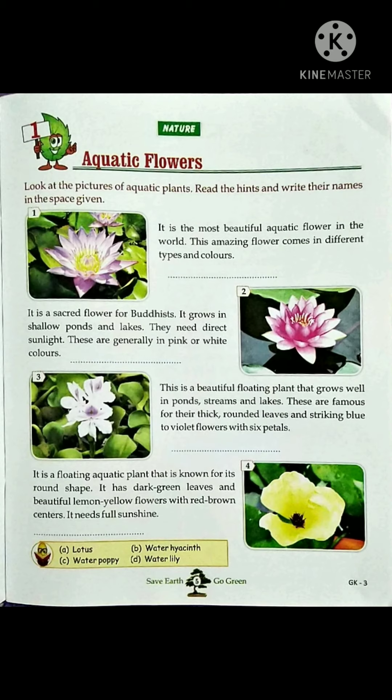This beautiful flower is water hyacinth, which in Hindi is also called 'jal kumbi.' It is a very beautiful flower, but it has a side effect: in the ponds where it grows, it can completely block the pond, so other aquatic animals cannot grow properly.